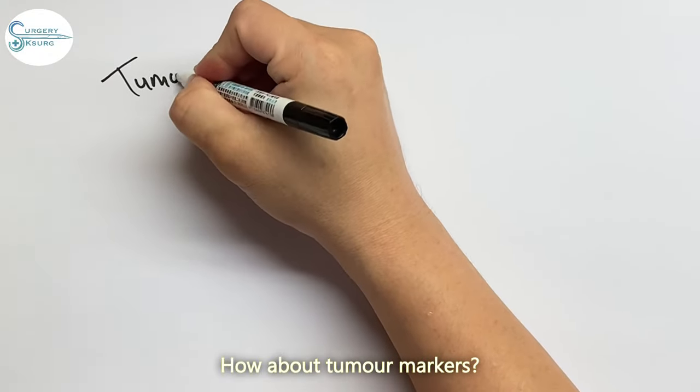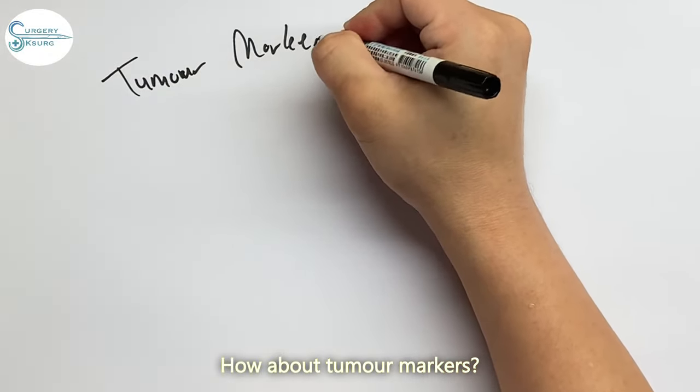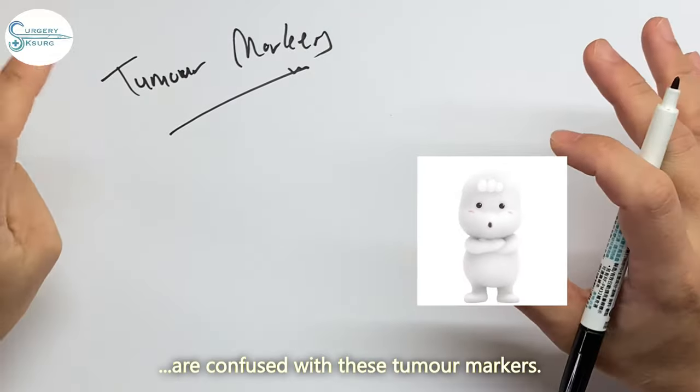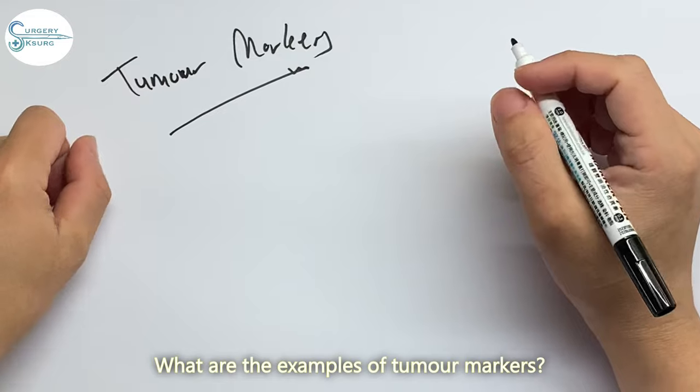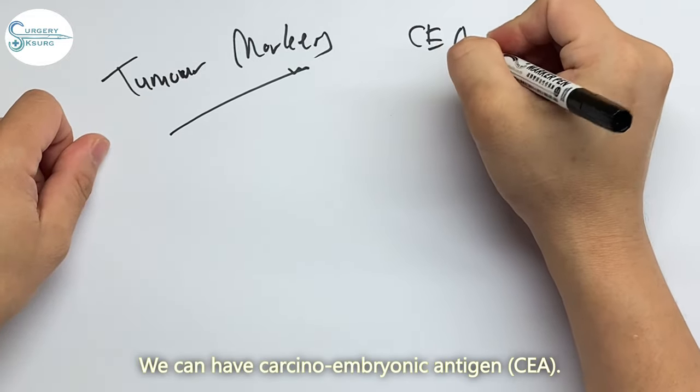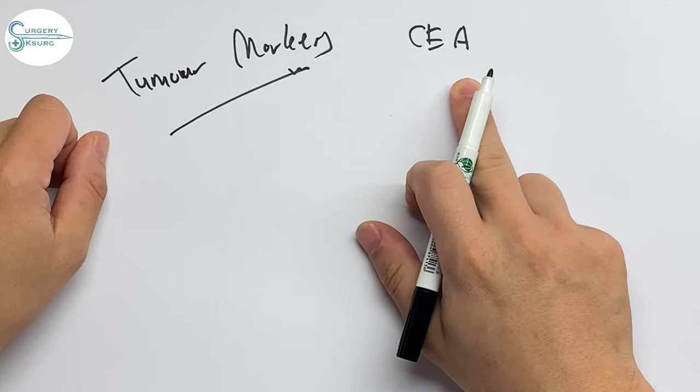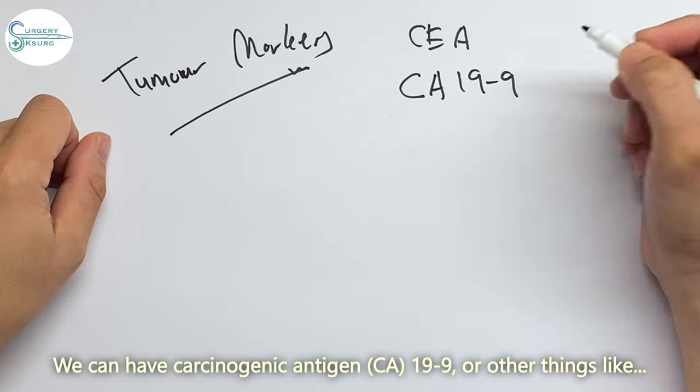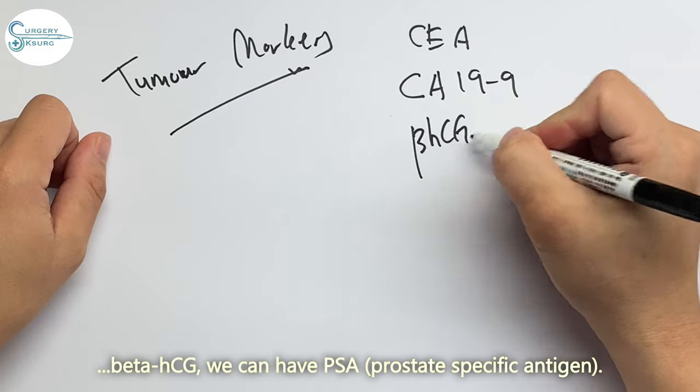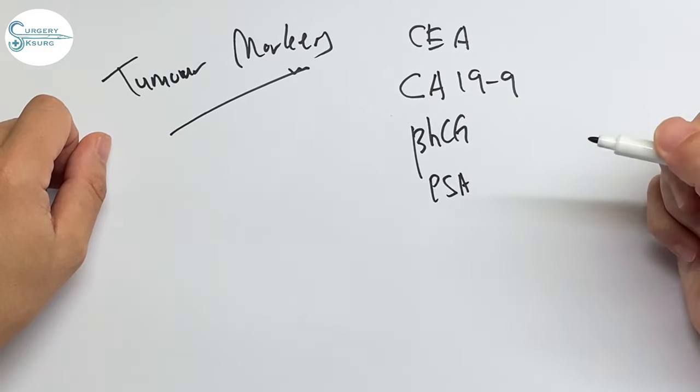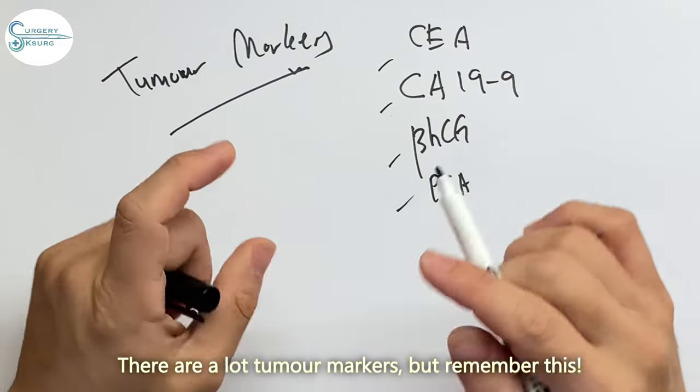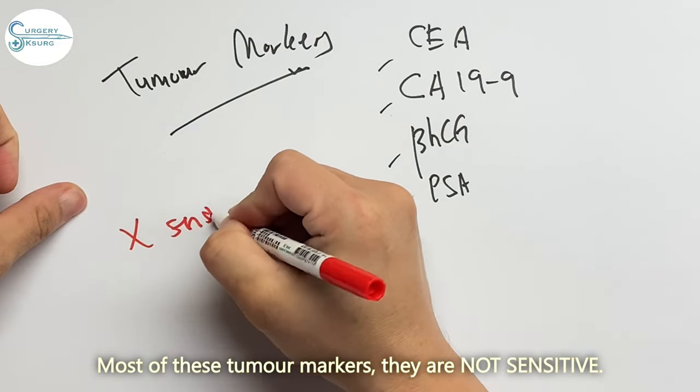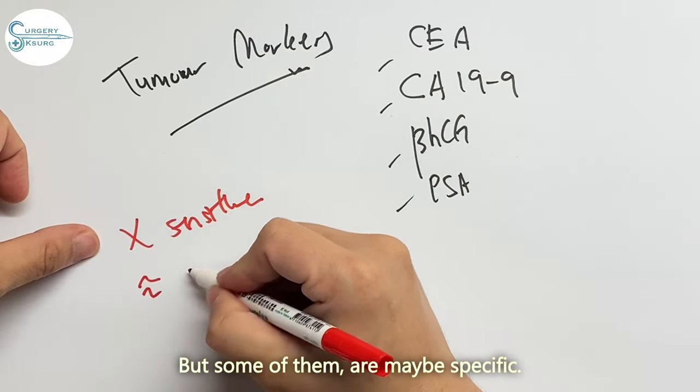How about tumor markers? It is one of my favorite topics because a lot of my students are confused with these tumor markers. What are the examples? We can have carcinoembryonic antigen CEA, carcinogenic antigen CA 19-9 or other things like beta HCG. We can have PSA. There are a lot of tumor markers but remember this: most of these tumor markers are not sensitive. But some of them maybe are specific.